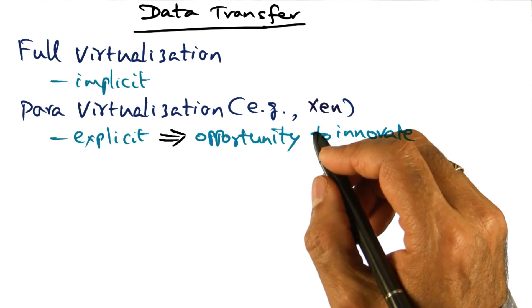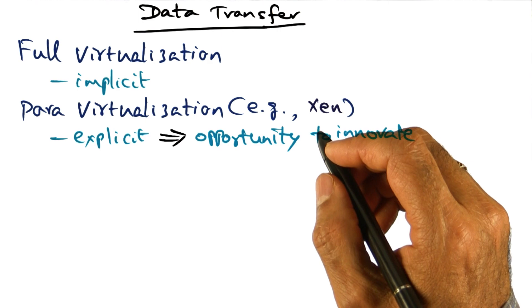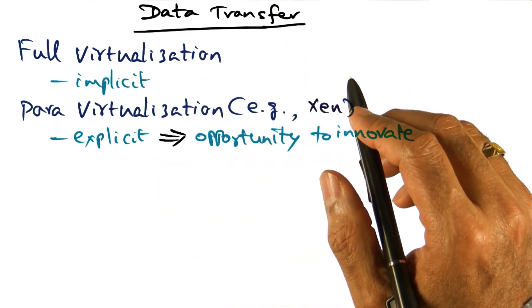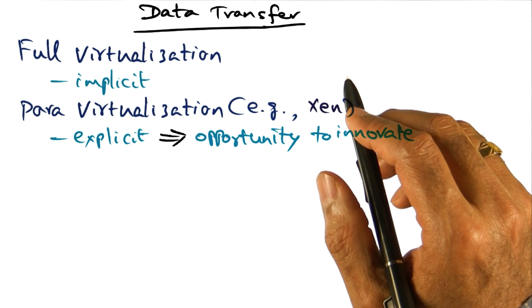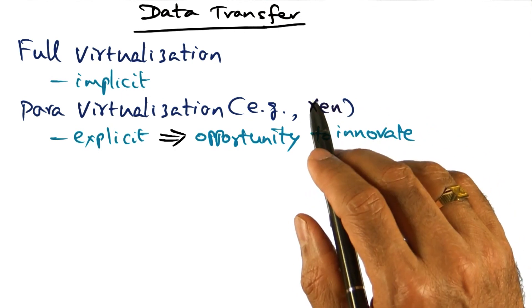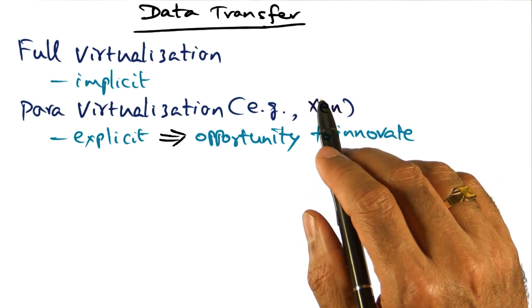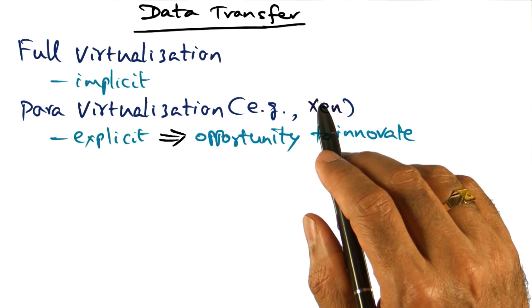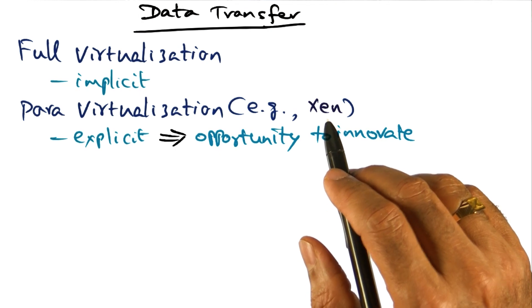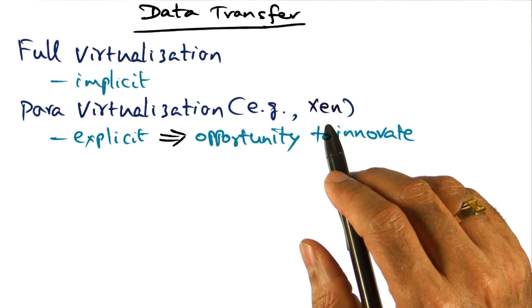The CPU time accountability is crucial from the point of view of billing in data centers. Therefore, hypervisors pay a lot of attention to how CPU time is accounted for and charged to the appropriate virtual machines. The second aspect of the data transfer is how the memory buffers are managed — that's a space issue — meaning how are the memory buffers allocated and managed either by the guest operating system or by the hypervisor.